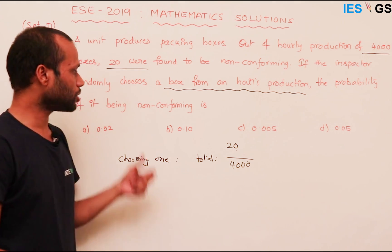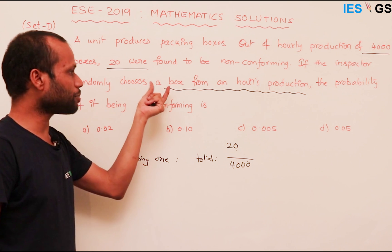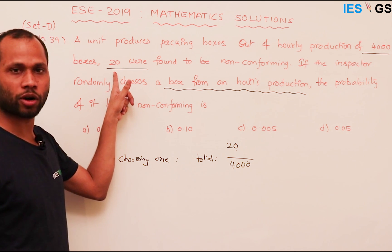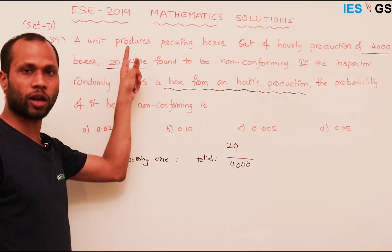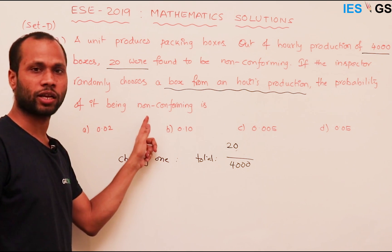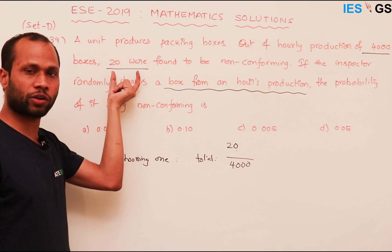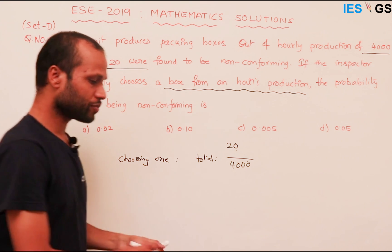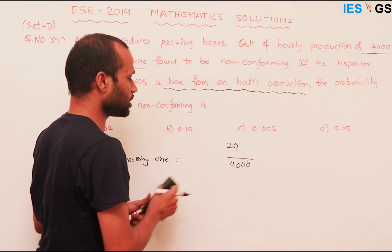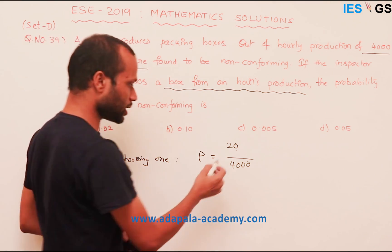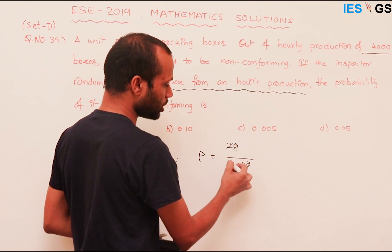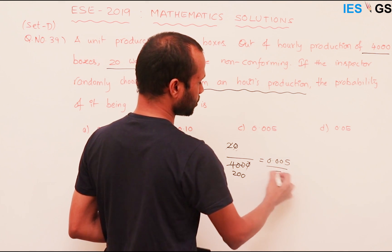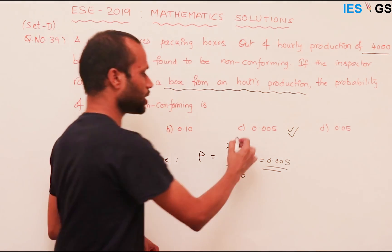He is choosing one box — what is the probability it belongs to the non-conforming category? There are 20 non-conforming products, so the number of ways to choose one from them is 20C1 = 20. Total ways = 4000C1 = 4000. So probability = 20C1 / 4000C1 = 20/4000 = 2/400 = 1/200 = 0.005. The correct option is C.